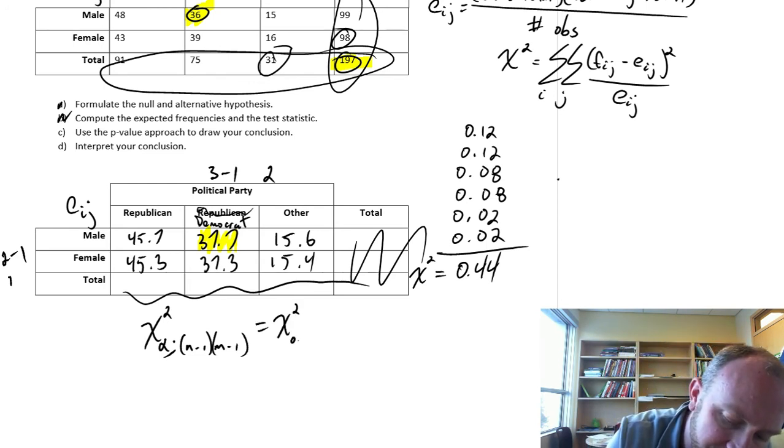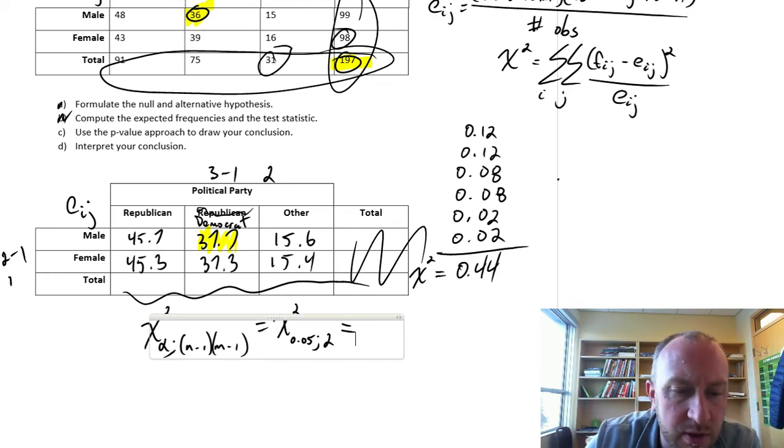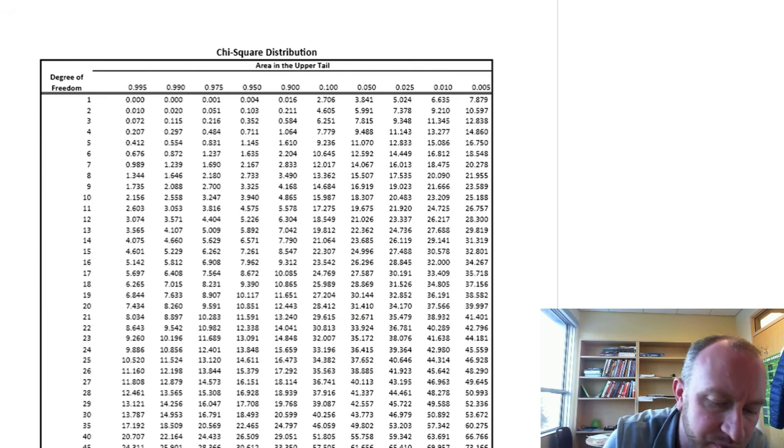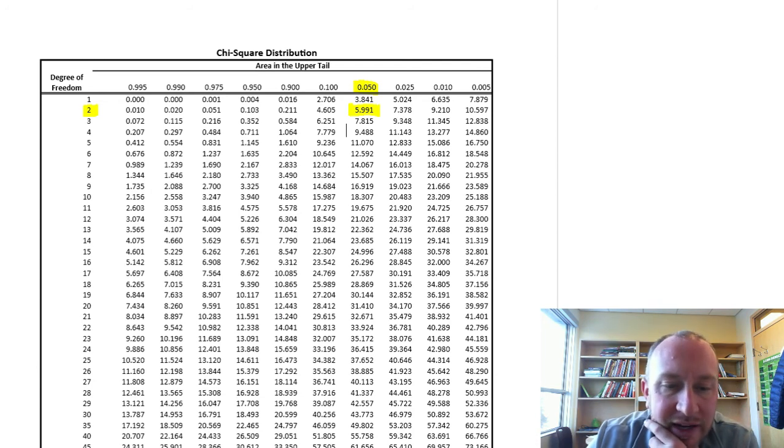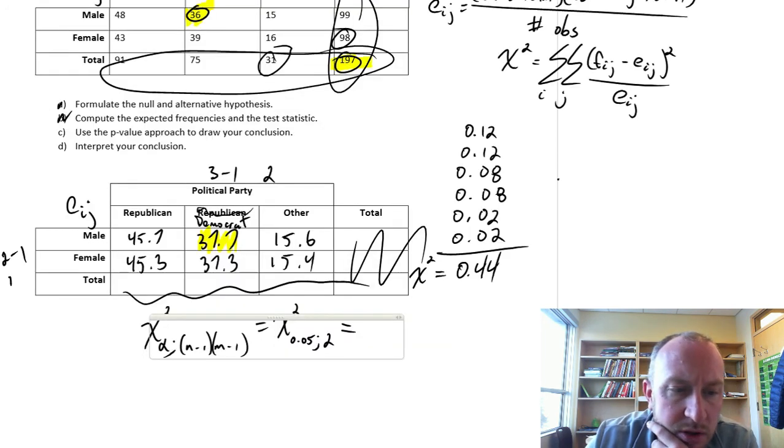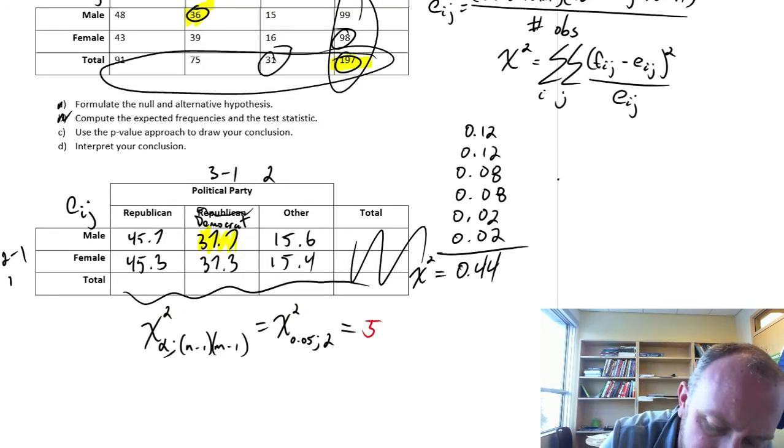Alpha is 0.05 and we have 2 degrees of freedom. If we go to our chi-squared table, 2 degrees of freedom, alpha 0.05, the critical value is 5.99.